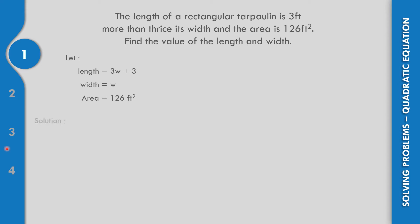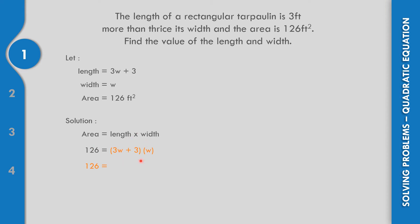The area of the rectangle is equal to length times width. So area equals 126, and the length is 3W plus 3, and the width W. Let us multiply: W times 3W plus 3 gives us 3W squared plus 3W.